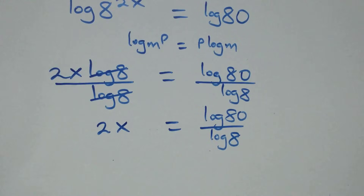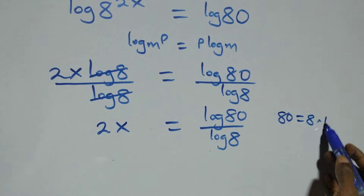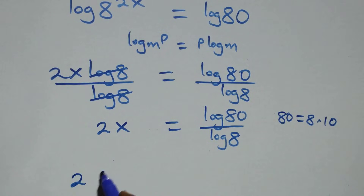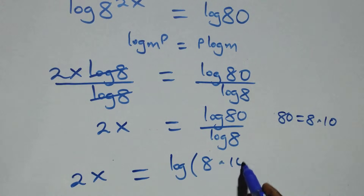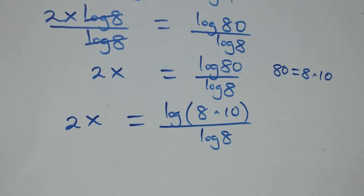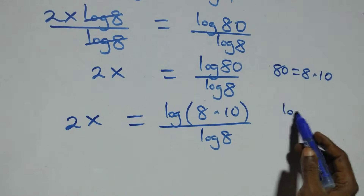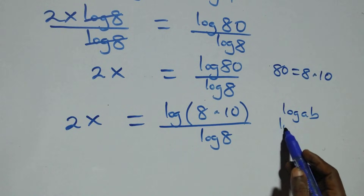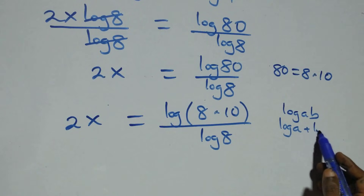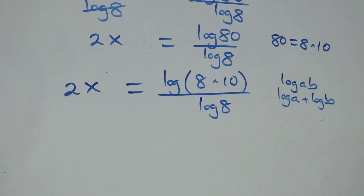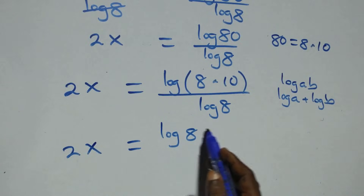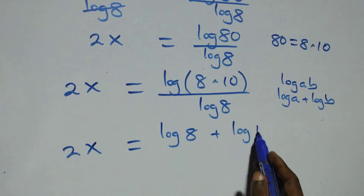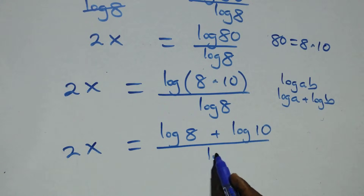The next step, we can write 80 as 8 times 10. This implies 2x equals to log(8 times 10) over log 8. This follows from the law of logarithms: log(a times b) is the same thing as log a plus log b.